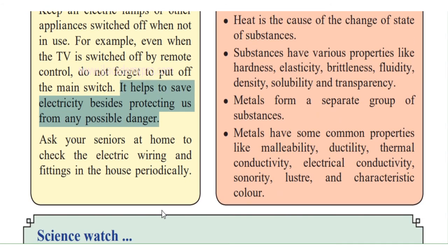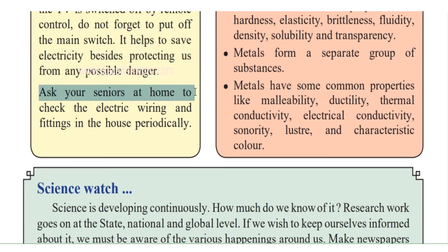Switching off appliances helps to save electricity besides protecting us from any possible danger. There is little electric current that passes through if you keep appliances on — it's a waste of electricity and money. Sometimes there are dips in electricity or excess current passes for some reason, and there could be a danger of a spark. Therefore, switch off from the mains when not using it. Ask your seniors at home to check the electric wiring and fittings periodically — maybe every three months, six months, or once a year.